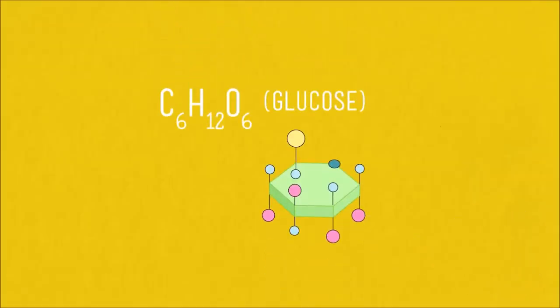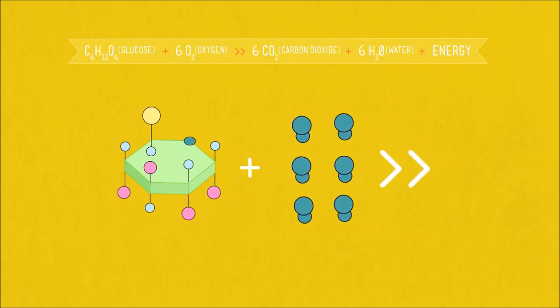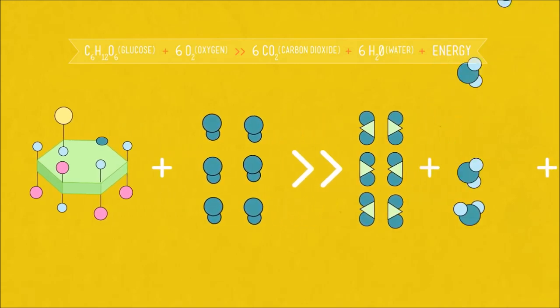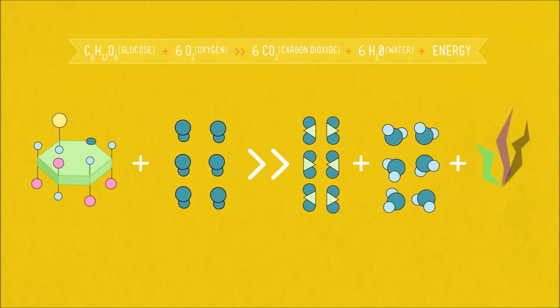Here's the chemical formula for one molecule of glucose. In order to turn this glucose into energy, we're going to need to add some oxygen. Six molecules of it to be exact. Through cellular respiration, we're going to turn that glucose and oxygen into six molecules of CO2, six molecules of water, and some energy that we can use for doing all of our pushups.